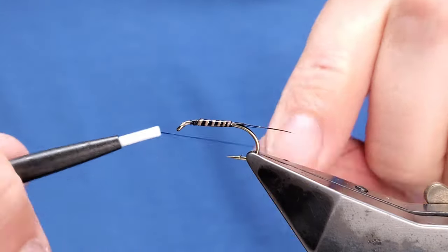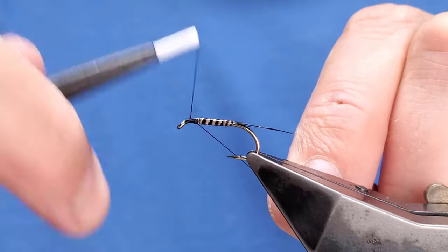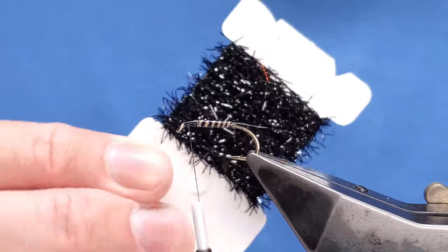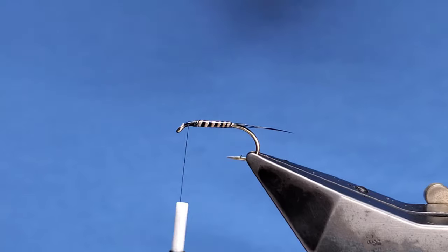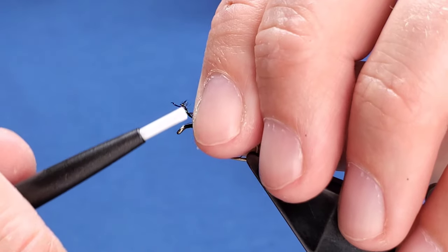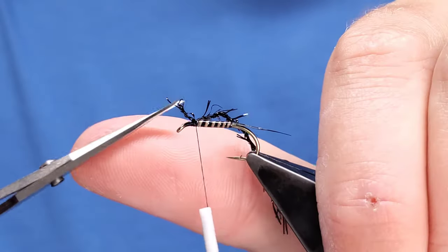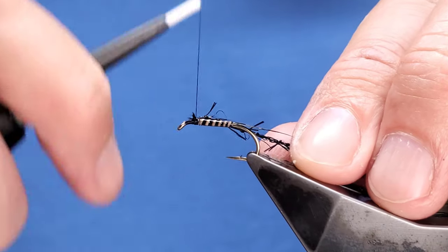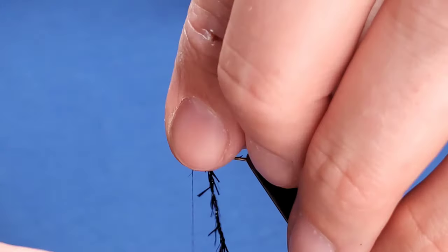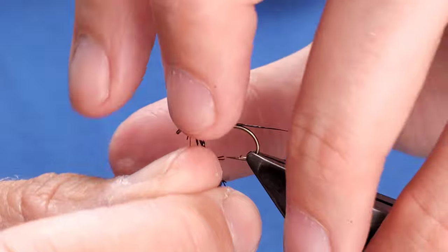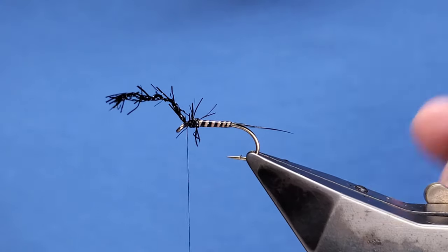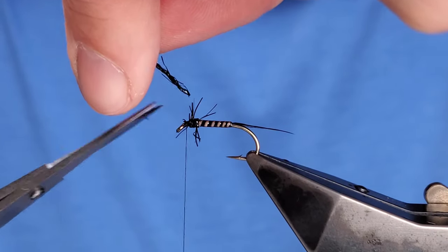Come back in with your UTC black, catch that right on. Now for the thorax, I've got plain micro struggle dyed black. Just take off a small section, you don't need much. Catch it in, trim away my waste piece, tighten that down. There's one, stroke the smaller fibers back. There's two. I'm going to thread over the top, keep everything tight. Trim away your tie-in.